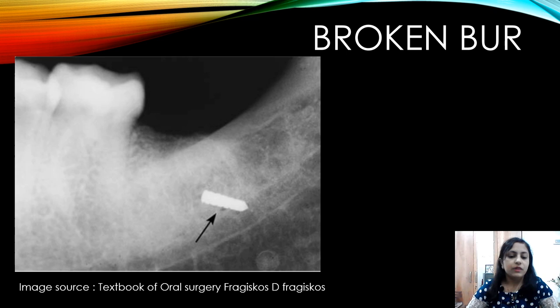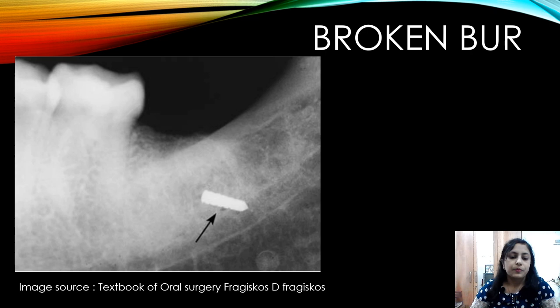When we are removing bone to extract the impacted third molar, the burr can break. This can happen when we use the same burr repeatedly, because that can change the metallic properties of the burr. If the burr breaks, you should localize it on the radiograph and then remove it at the same time that you are removing the tooth.